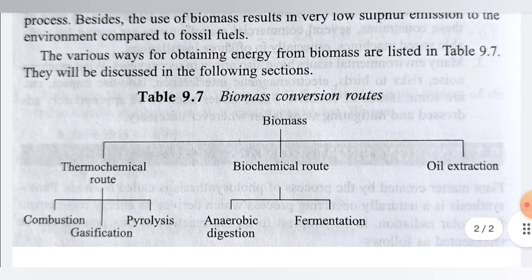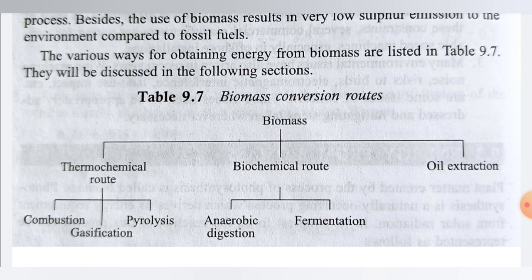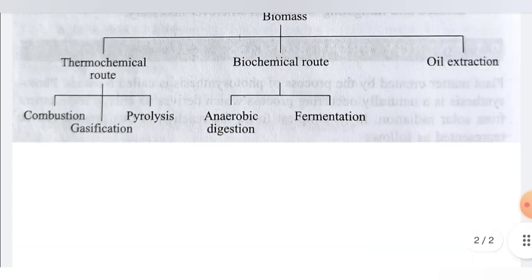The various ways of obtaining energy from biomass are listed in table 9.7, which will be discussed in the following session. Here, table 9.7 shows the biomass conversion routes. There are three main routes: thermochemical routes, biochemical routes, and oil extraction. In the thermochemical routes there are three steps — combustion, gasification, and pyrolysis. In the biochemical routes there are two processes — anaerobic digestion and fermentation. The third step is oil extraction for biomass conversion.